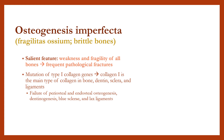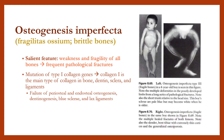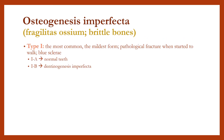Collagen type 1 is the main type of collagen in dentine, sclera, and ligaments. There is failure of periosteal and endosteal osteogenesis, dentinogenesis imperfecta, blue sclera, and lax ligaments. Type 1 is the most common and mildest form, with pathological fracture when the child starts to walk and blue sclera.